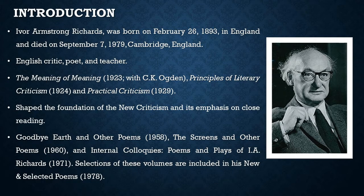Richards was educated at Magdalene College, Cambridge, and was a lecturer in English and Moral Sciences there from 1922 to 1939. In that period, he wrote three of his most influential books: The Meaning of Meaning, co-authored with C.K. Ogden, published in 1923 — a pioneer work on semantics — then Principles of Literary Criticism in 1924, and finally his seminal work Practical Criticism in 1929.